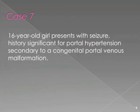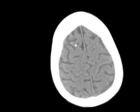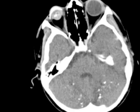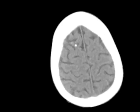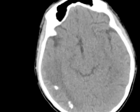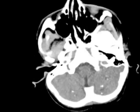Case 7 will be our final case. A 16-year-old girl presents with a first-time seizure. Her medical history is significant for portal hypertension secondary to a congenital portal venous malformation. These are images from the patient's head CT scrolling from top to bottom. We see calcifications in the parenchyma, in the periventricular regions, the basal ganglia, and throughout the cerebellum.